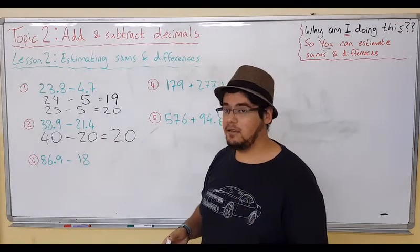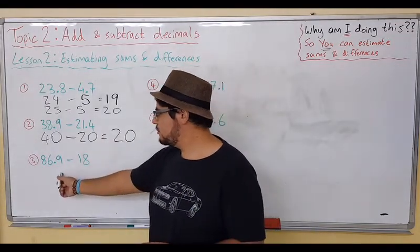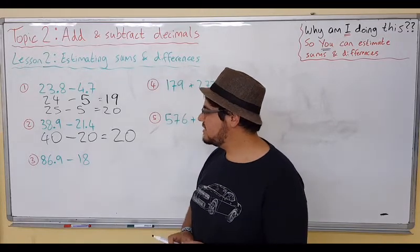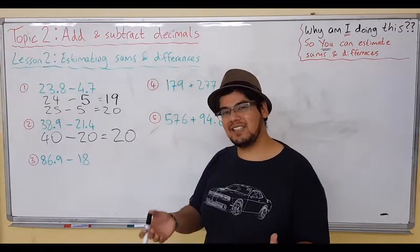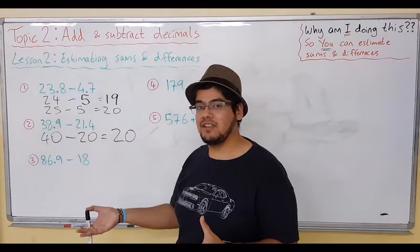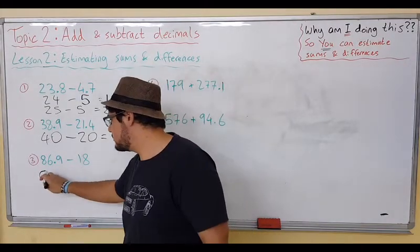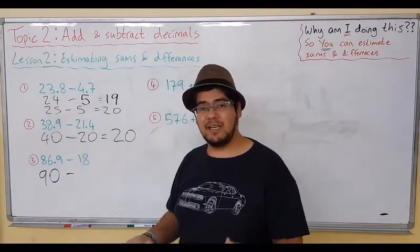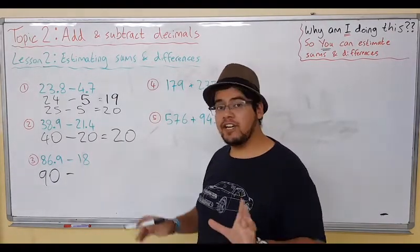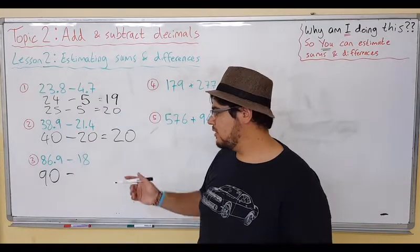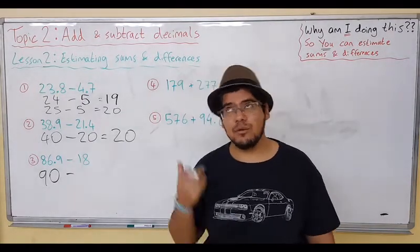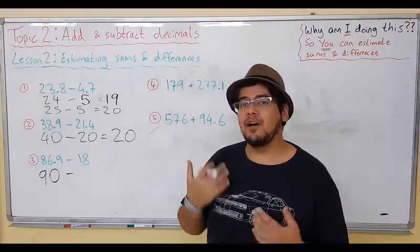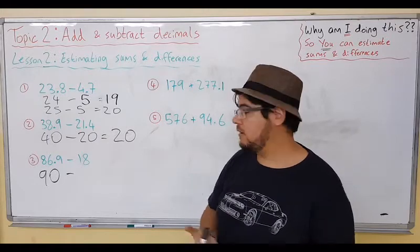Let's move on to this one: 86.9. It's so close to 90, so let's just use 90. Subtract 18. It's already a whole number, but do I really want to keep 18 the same? 90 subtract 18—do I really want to think about it? I only need an estimation.